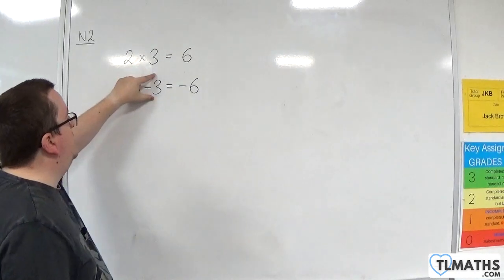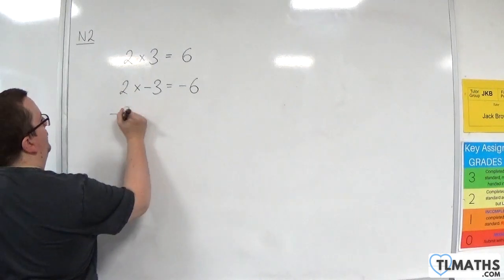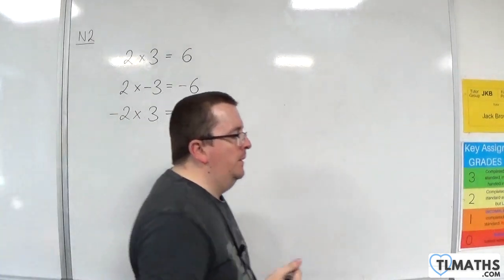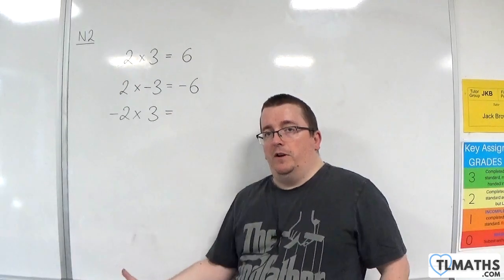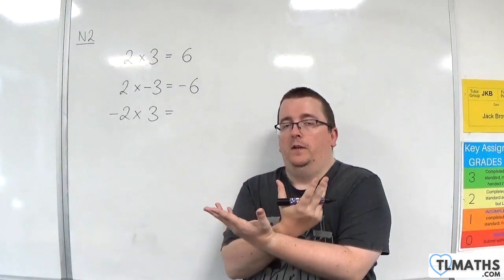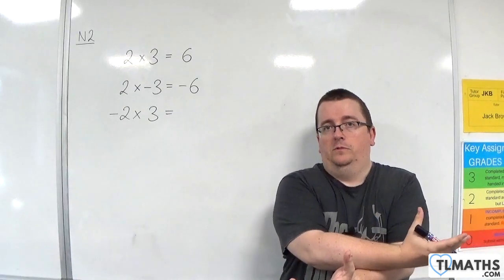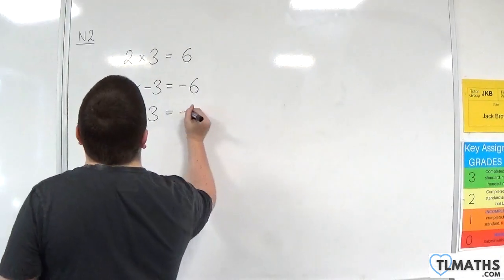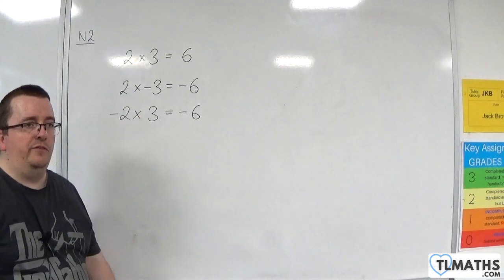What about minus 2 times 3? Minus 2 times 3 is the same as 3 times minus 2 — you can change the order. That gives minus 2 plus minus 2 plus minus 2, which is minus 2 take away 2 take away 2, equalling minus 6. So a positive times a negative is a negative, and a negative times a positive is also a negative.